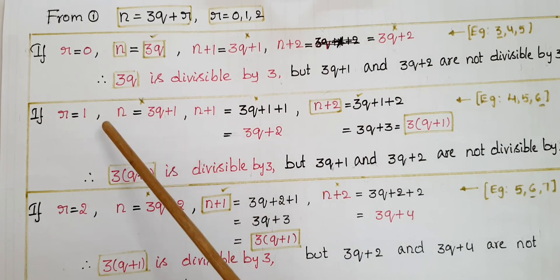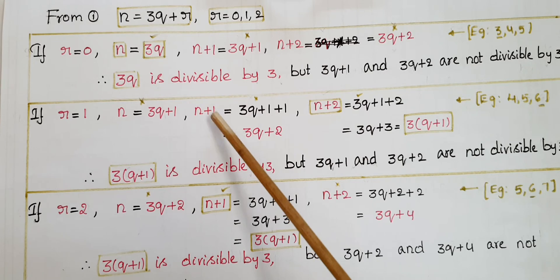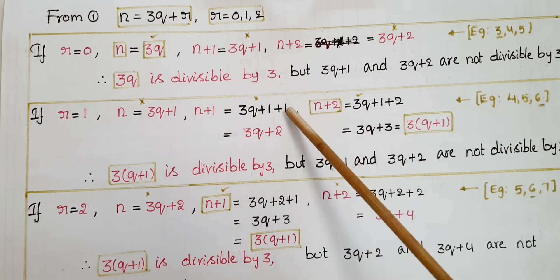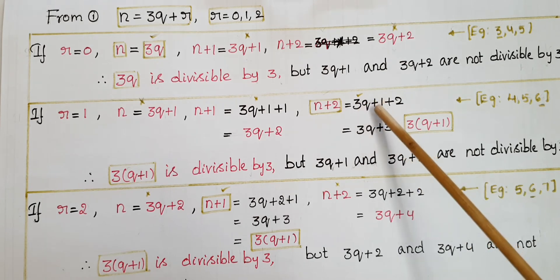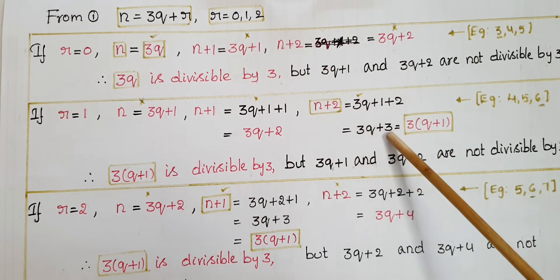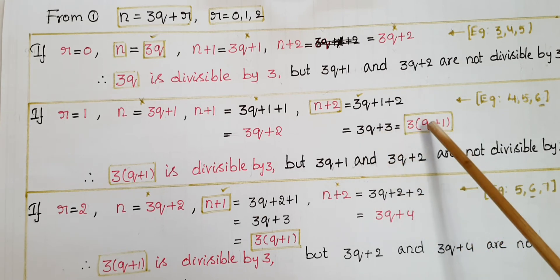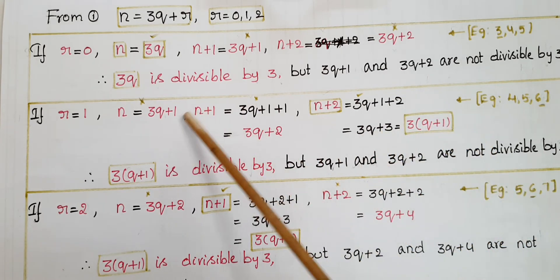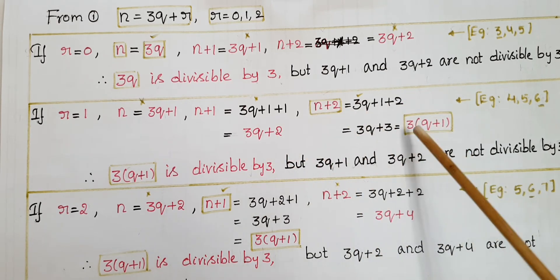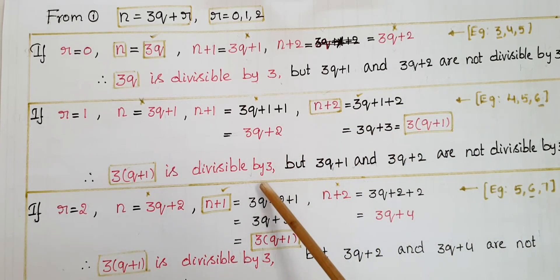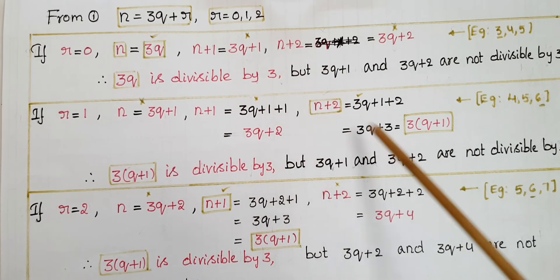Similarly, if r = 1: n = 3q+1, n+1 = 3q+2, and n+2 = 3q+1+2 = 3q+3 = 3(q+1). Observing these three consecutive positive integers, only 3(q+1) is divisible by 3. Here 3q+1 and 3q+2 are not divisible by 3.